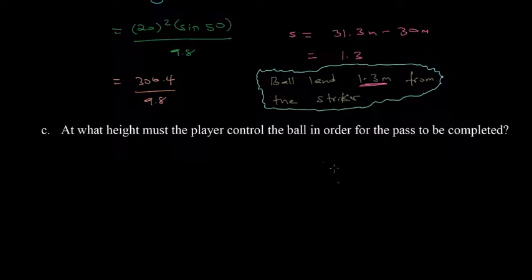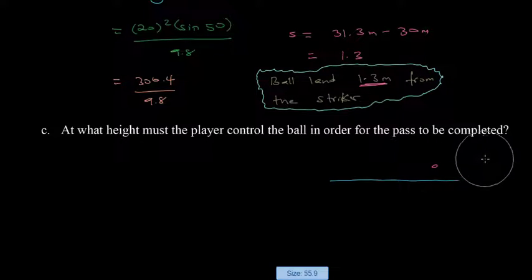So if we consider a simple sketch, let's say this is the striker right here. Let's say we made the striker blue. So this is the striker there. What we're seeing is that the ball is expected to land 1.3 meters from the player. Now we want to know, if the ball is traveling, it's going to go something like this in order to reach that point. So this player now would have to control the ball in the air. So we want to know what's that height that the player will actually have to control the ball.